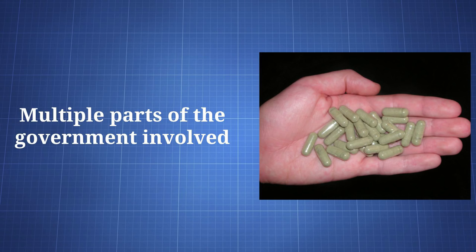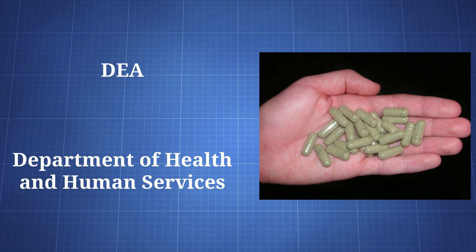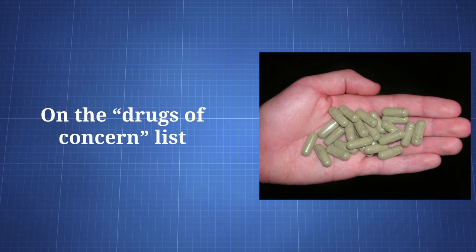So with the temporary scheduling process, there are a couple important players to be aware of. First, the Attorney General has delegated their power in this area to the DEA. Second, the Secretary of Health and Human Services, who the DEA must contact on these matters, has delegated their power to the Assistant Secretary of Health. In this case, the process went as follows.